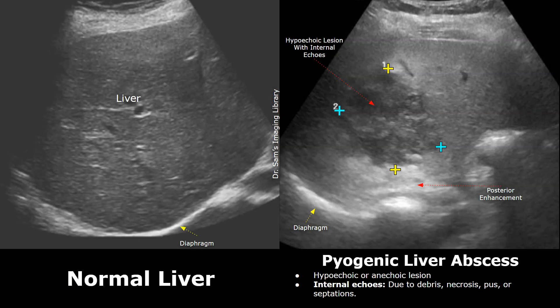We will compare the normal ultrasound appearance of the liver with the appearance of the liver having an abscess. The normal liver has a homogeneous echo texture, meaning the echoes are evenly distributed with no patchy or irregular areas. It appears as a smooth, uniform, medium gray structure. This bright curved structure is the diaphragm.